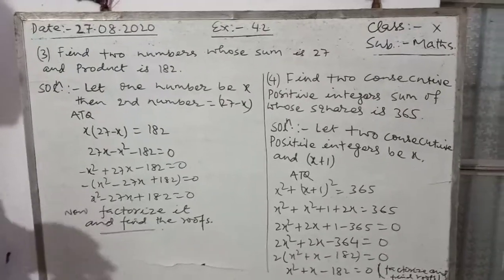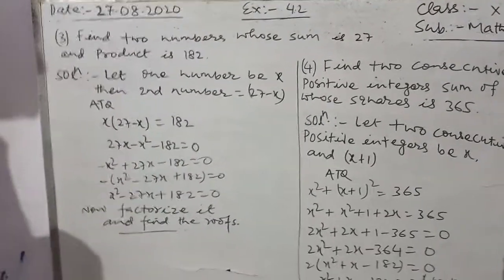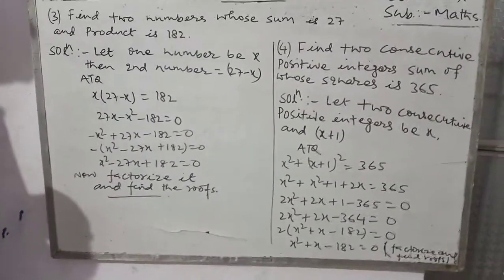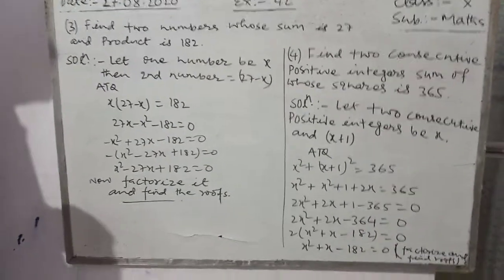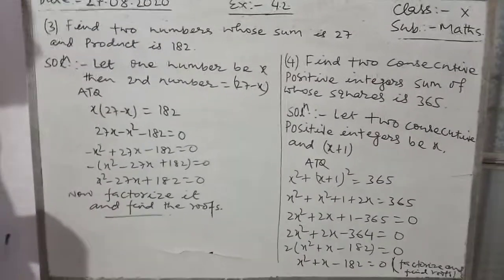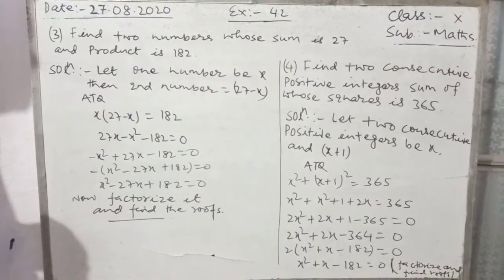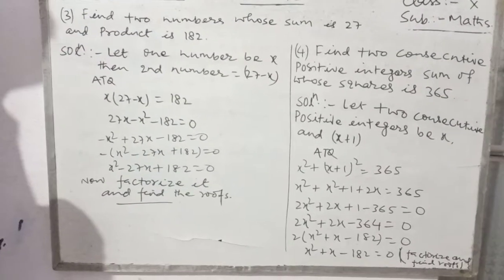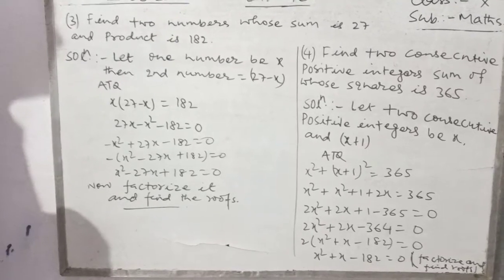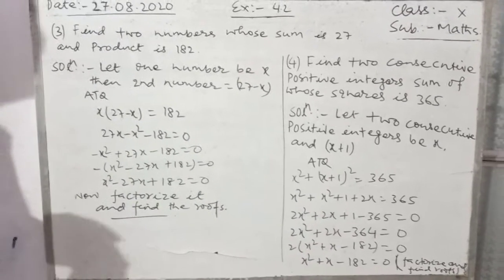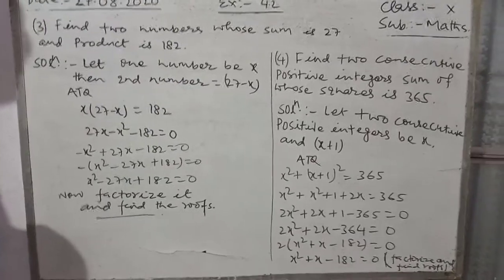Students, we need two numbers whose sum is 27. For example, if one number is 15, then the other number is 27 minus 15, which is 12. But if one number is not known, we let one number be x, then the other number is 27 minus x.